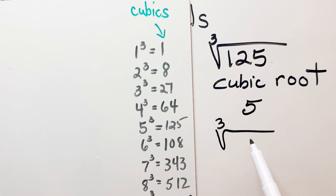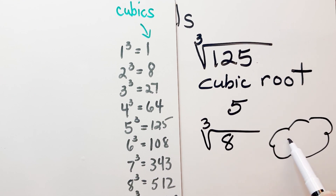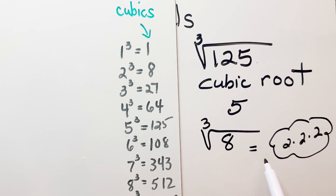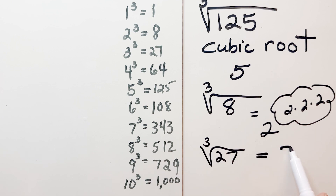For the cubic root of 8 — I know two times two times two is eight, so the cubic root of 8 is equal to two. How about the cubic root of 27? The factors all have to be the same: three times three is nine, and nine times three is 27, so the cubic root of 27 is equal to three.